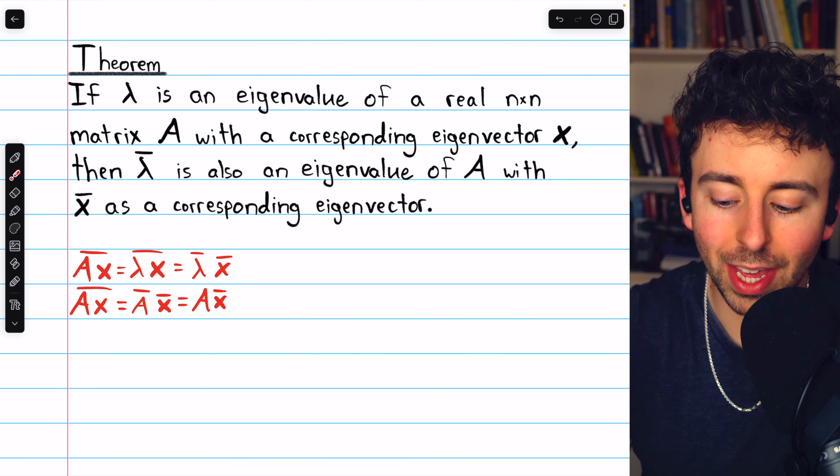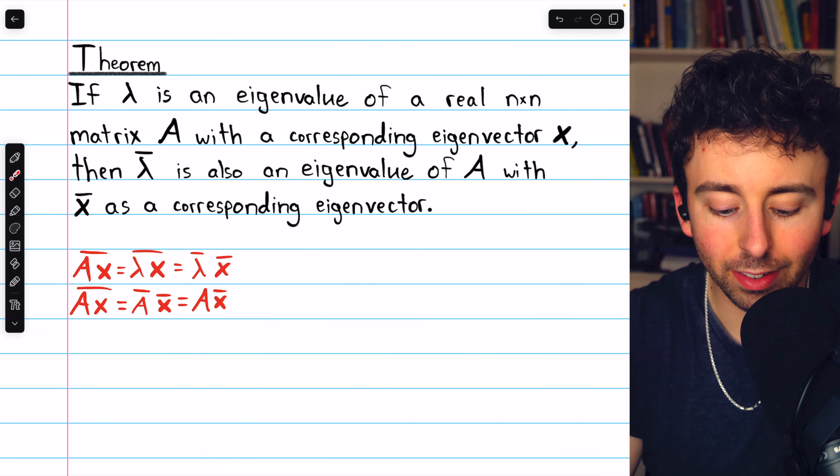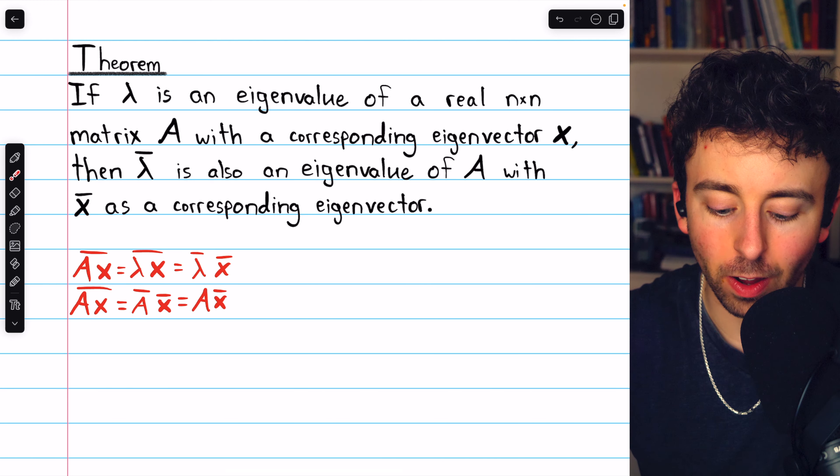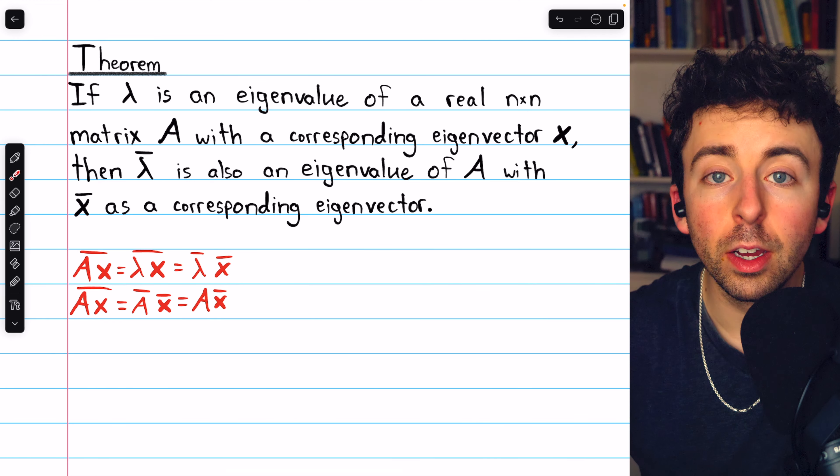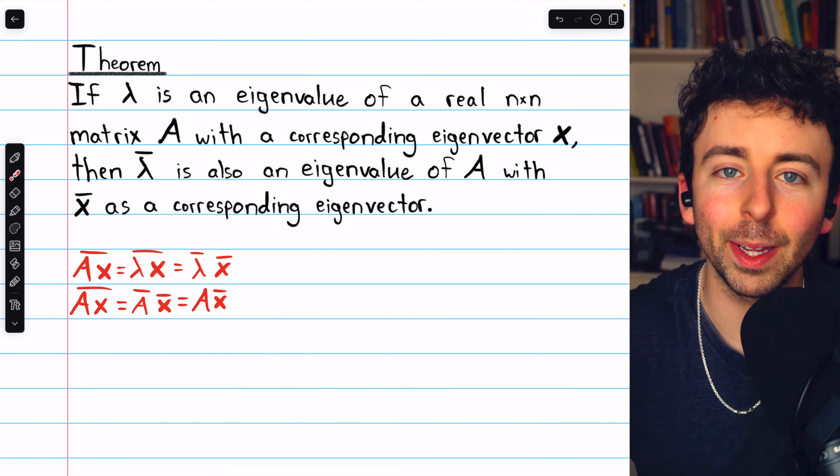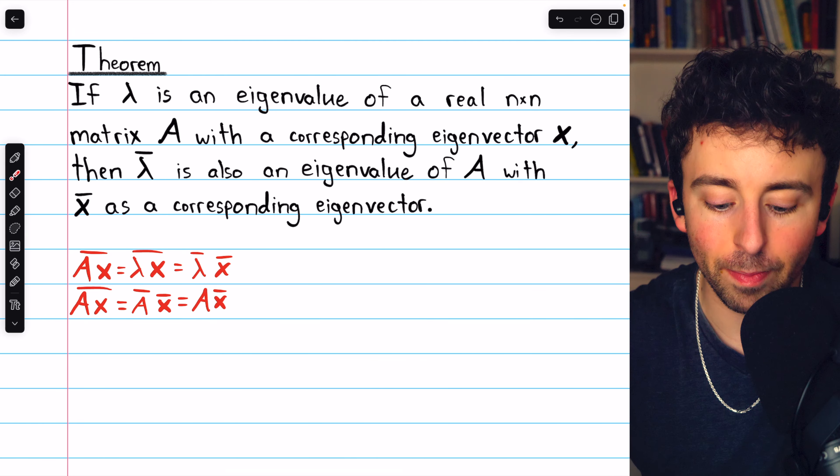But then also, remember that A is a real matrix. So, the conjugate of A times X, we can also write as A conjugate X conjugate, but the conjugate of a real matrix A is just the real matrix A. Taking the conjugate of real numbers does not change them.